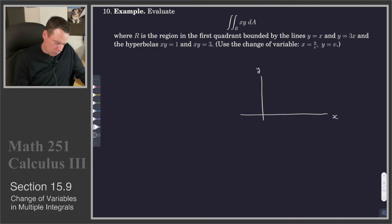So for the xy region, we've got y equals x, so it looks like this. We've got y equals 3x, which looks like this. So there's our y equals x, y equals 3x, and then we've got these hyperbolas.